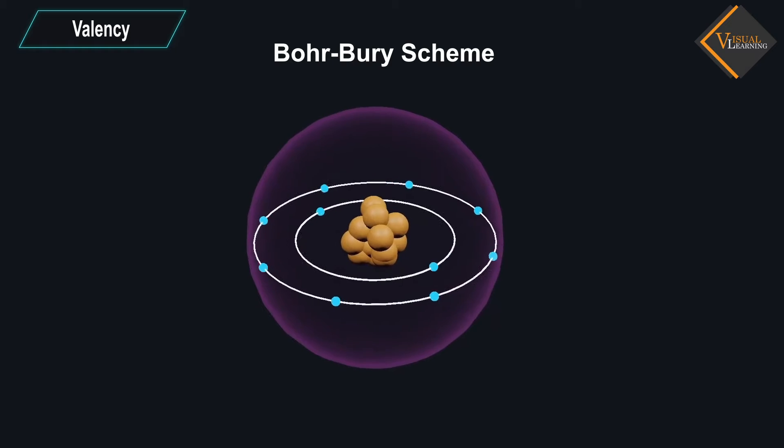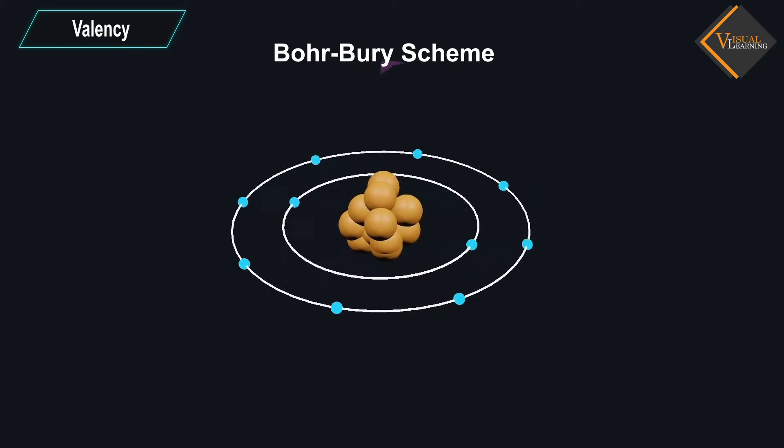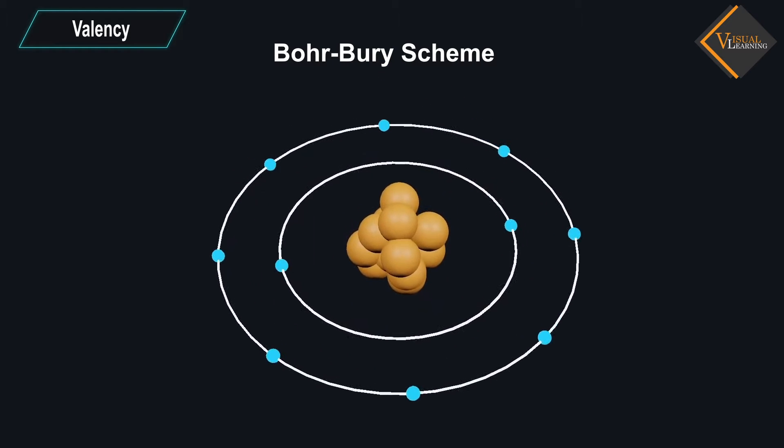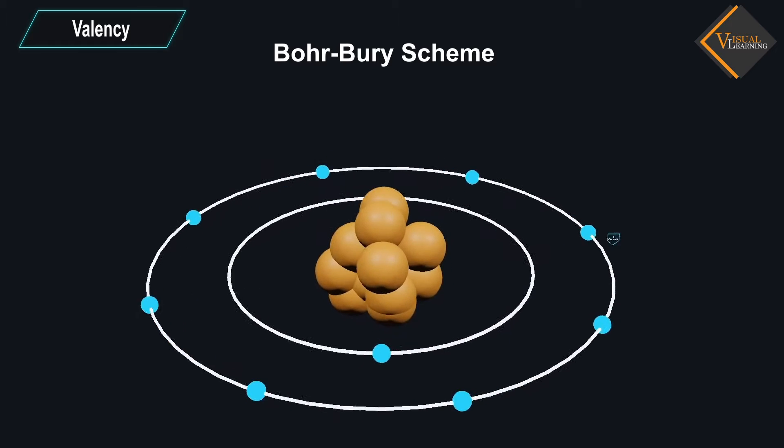From the Bohr-Burry scheme, we also know that the outermost shell of an atom can accommodate a maximum of 8 electrons.